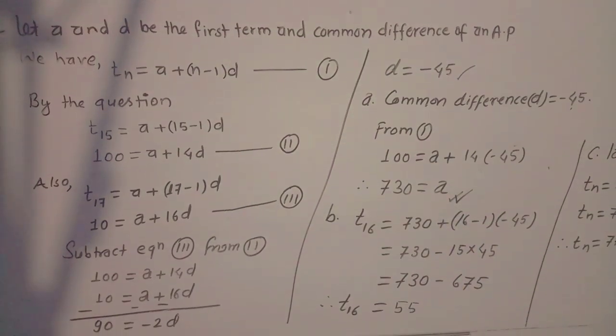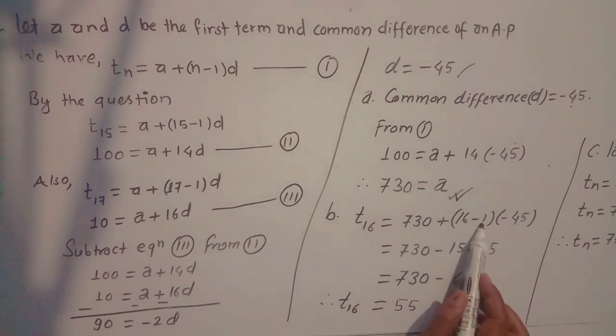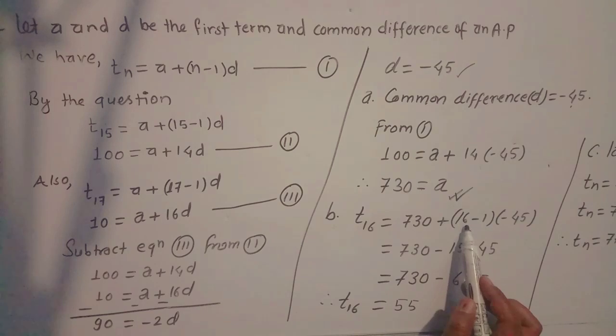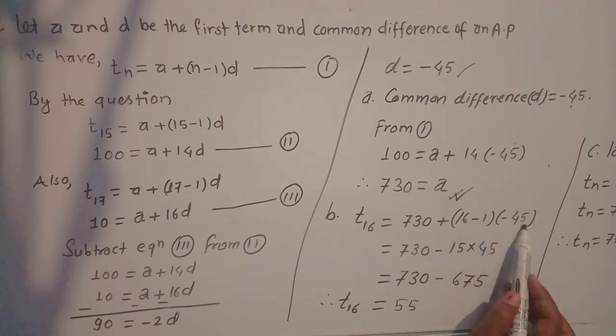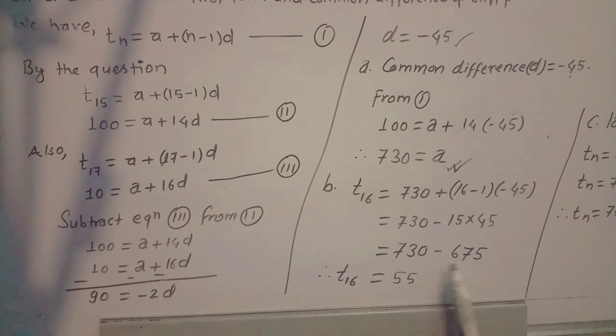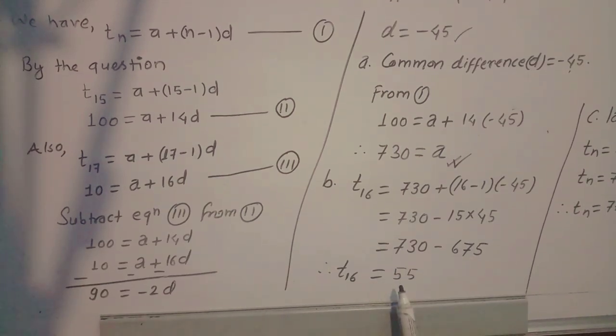Now find t16. t16 equals to a plus (n-1) times d. a ko value chai 730, 16 minus 1 is 15, d ko value is minus 45. After simplification: 730 minus 15 times 45. 15 times 45 is 675. 730 minus 675 gives 55. So t16 ko value is 55. The 16th term is 55.